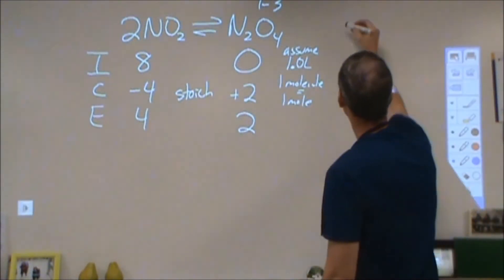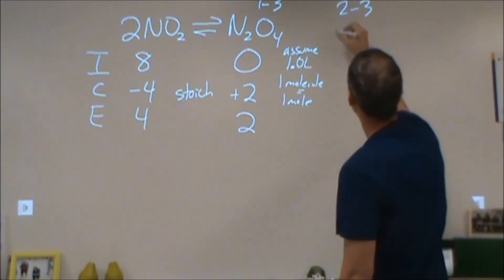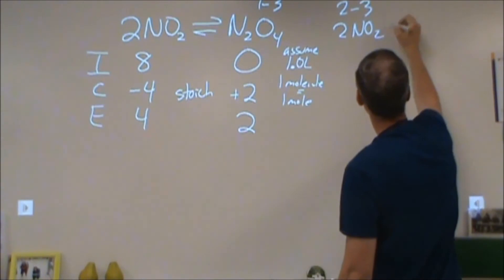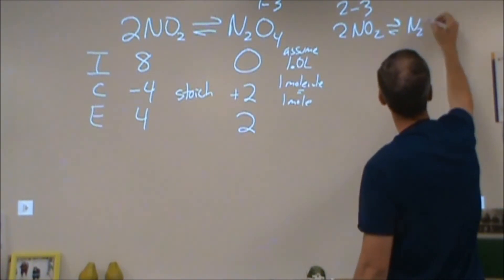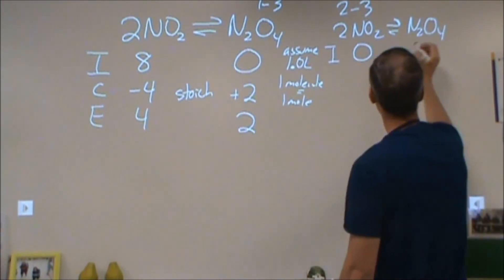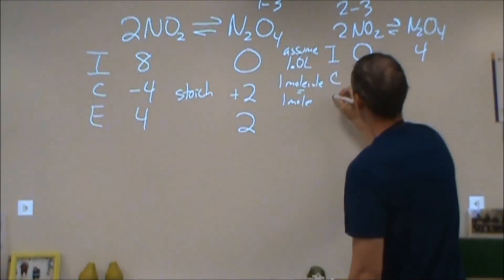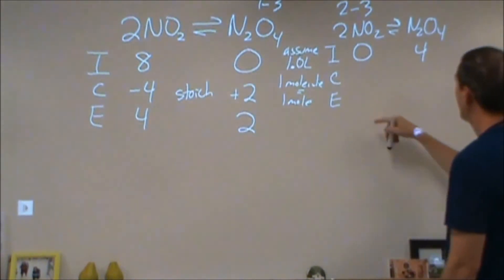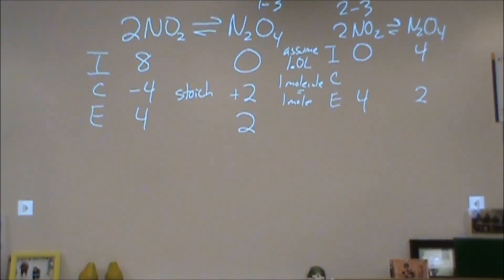In the second one, we did experiments two to three for the same reaction. 2 NO2 turns into N2O4. For our initial, we started with no reactant and we started with four moles of product. Then we had a change. Then we ended up at equilibrium. For part three, we ended up with two of these and four of these.